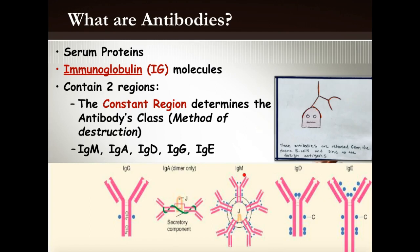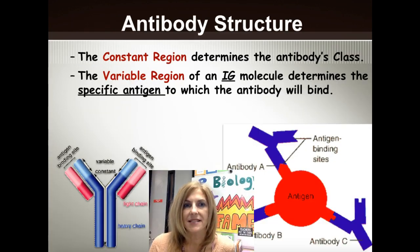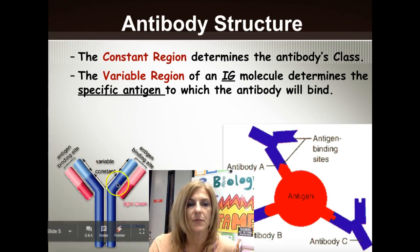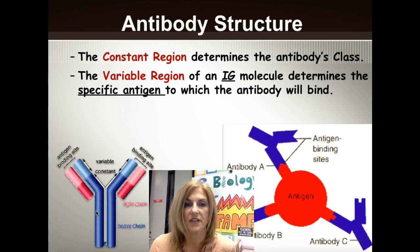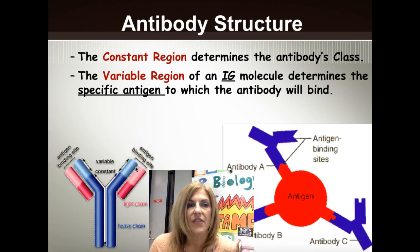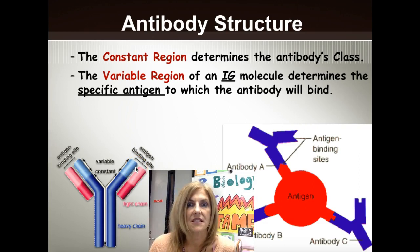For example, IgG can cross the mother's placenta, but the other antibodies cannot. IgA is found in breast milk, tears, and saliva, so different antibodies may be found in different locations. The constant region — shown here in dark shaded blue and pink — determines the antibody's class. The lighter portion at the top is the variable region, which becomes highly specific in order to match the binding sites of different antigens. This is where the variability in our immune system comes from.